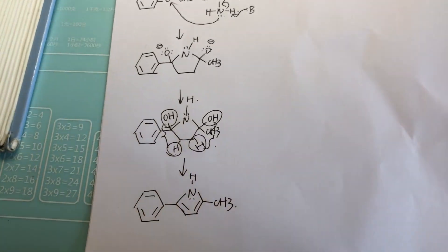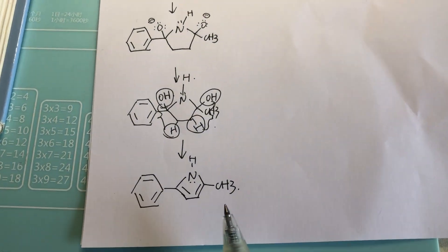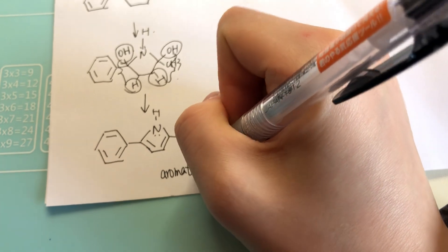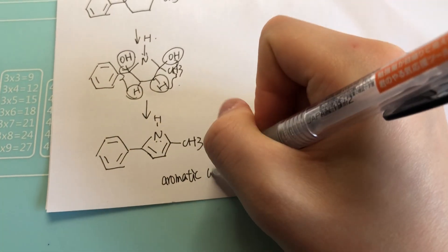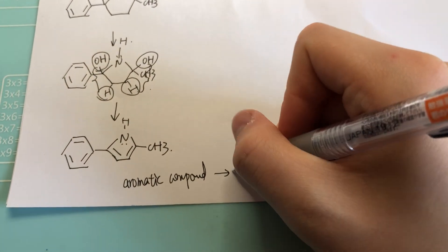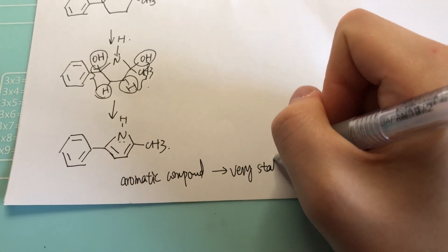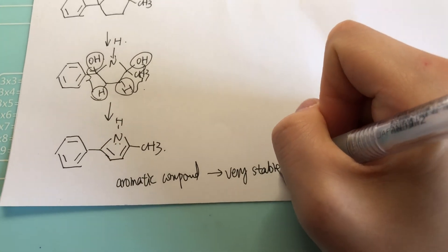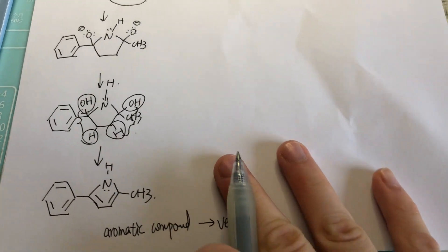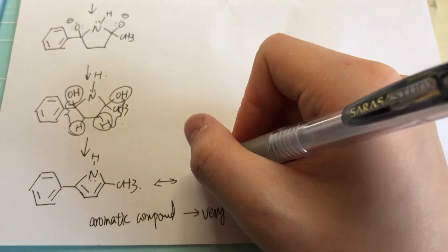You might ask why. Because, as you can see in detail, this is an aromatic compound, which means it's very, very stable, since there is delocalization of electrons among those unhybridized p orbitals. And I can show you here — you can see there will be resonance.